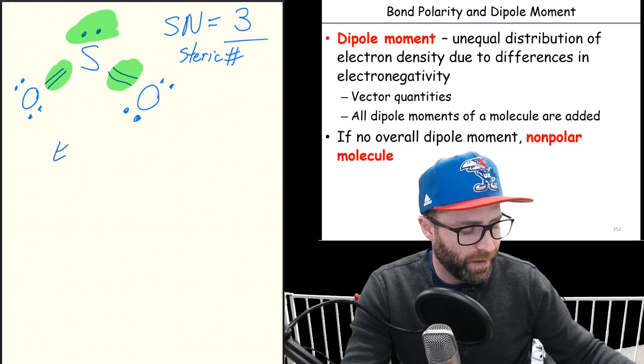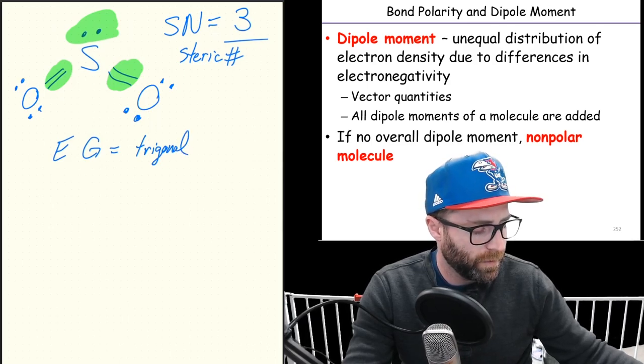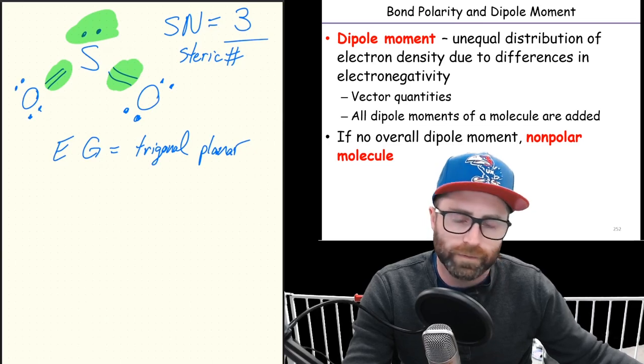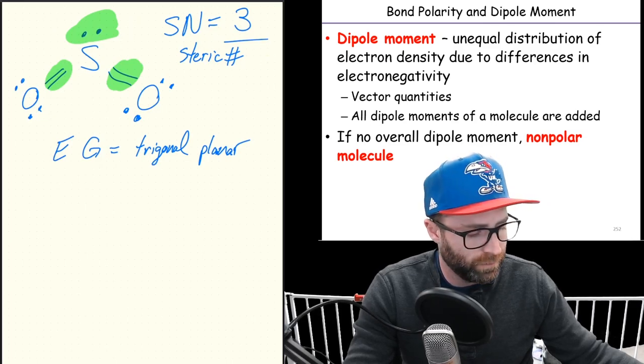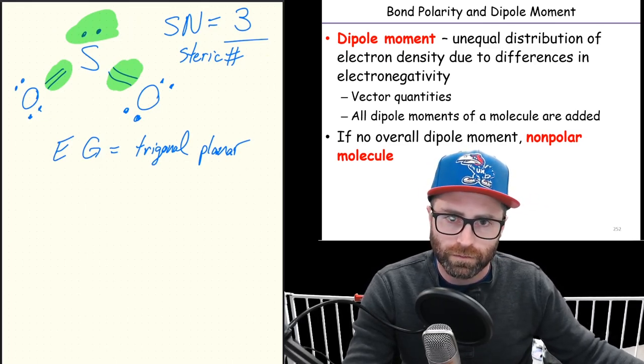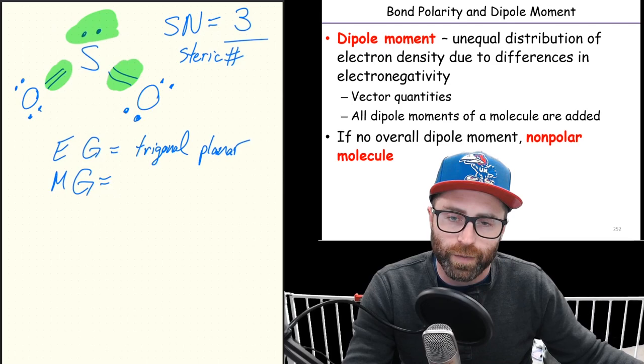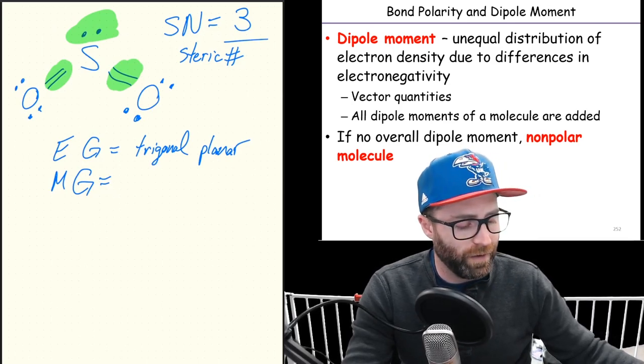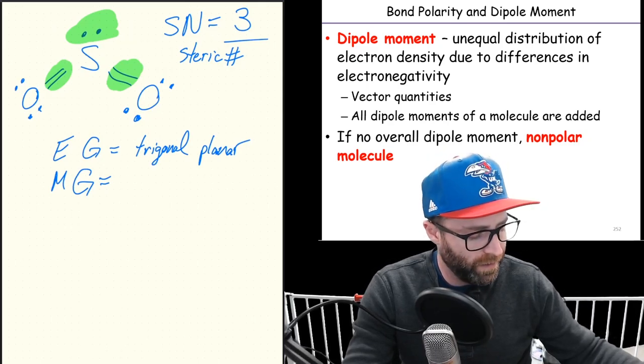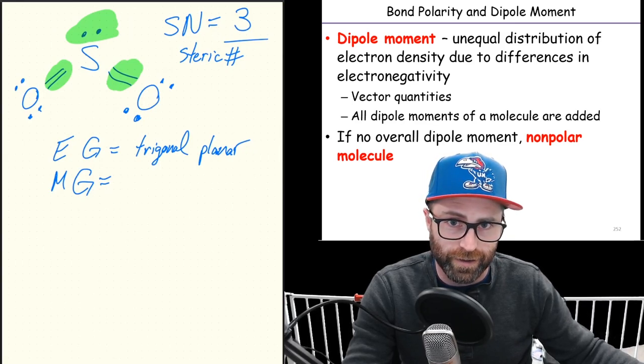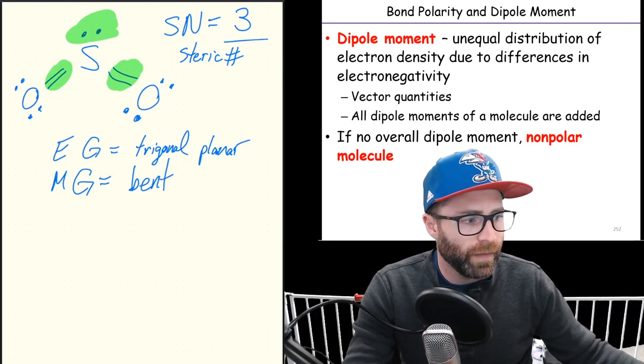Because the electron geometry is just based off of the steric number. Molecular geometry is going to be your steric number based off of how many lone pairs you got versus bonding - one lone pair versus two bonding gives us bent.